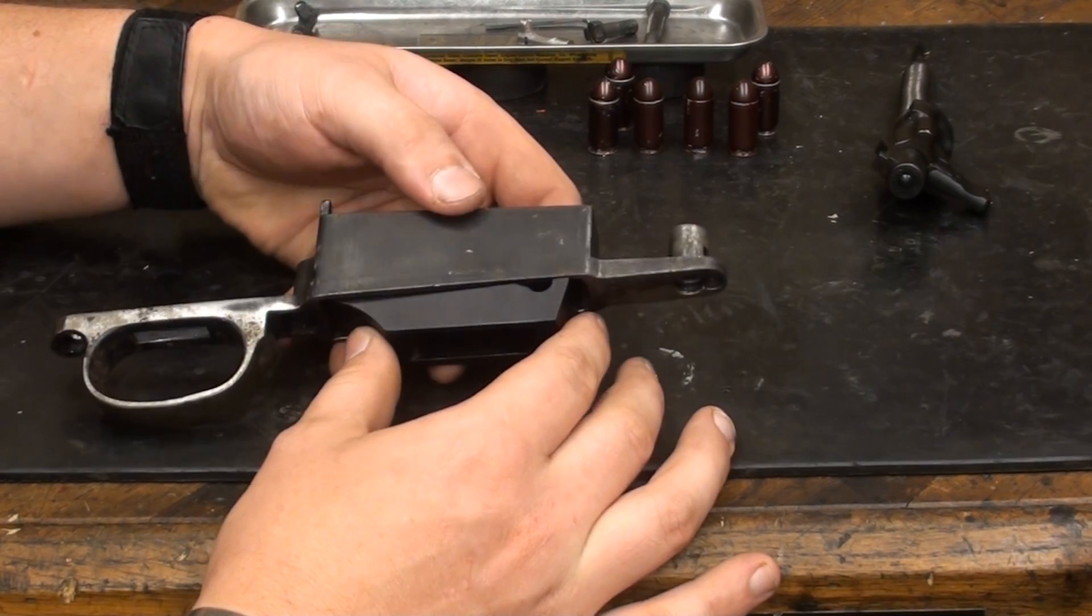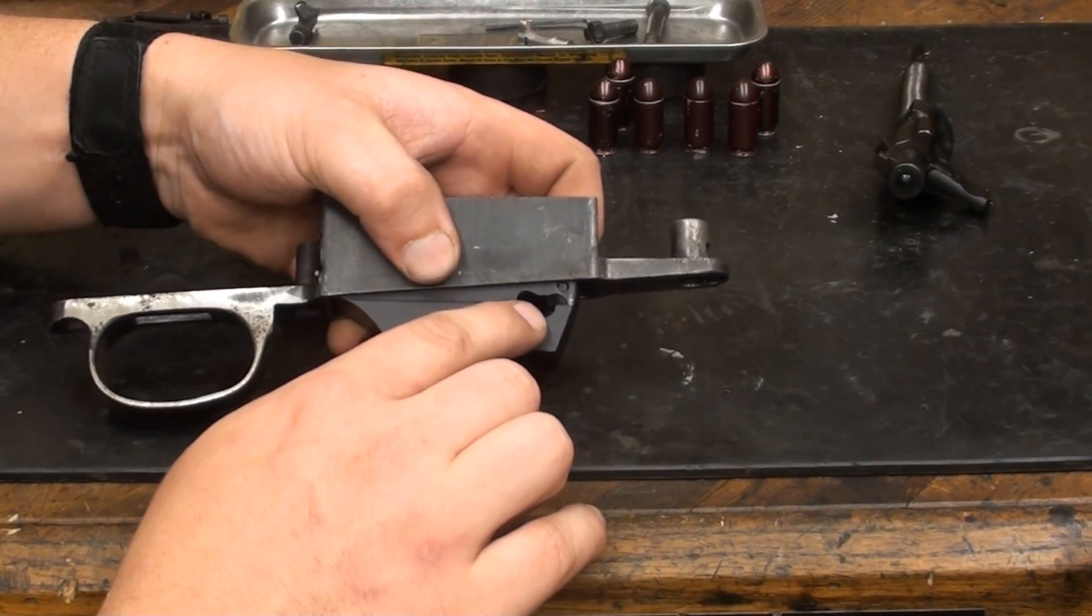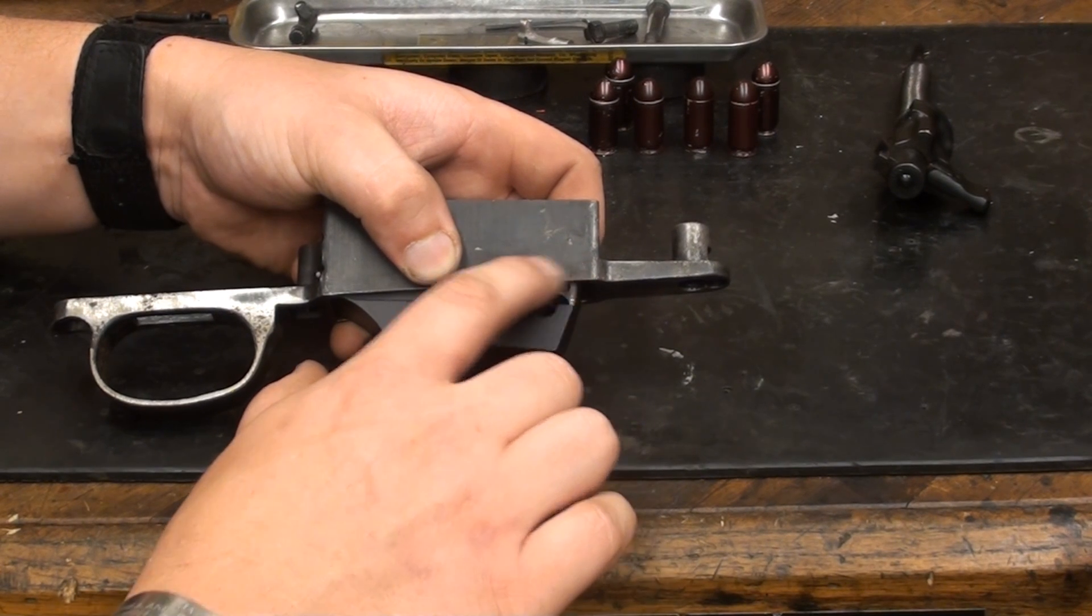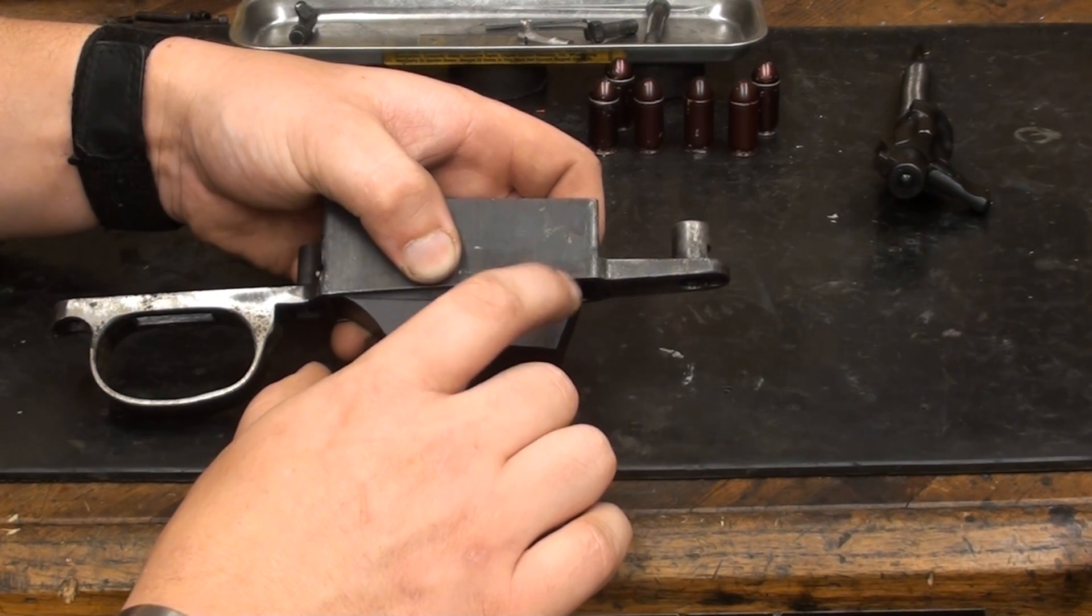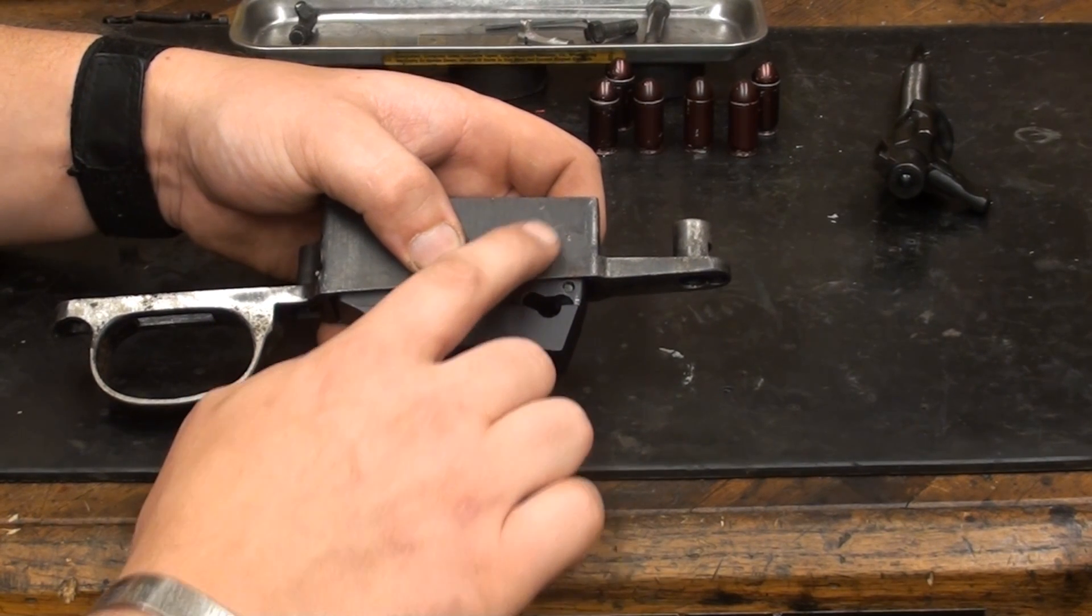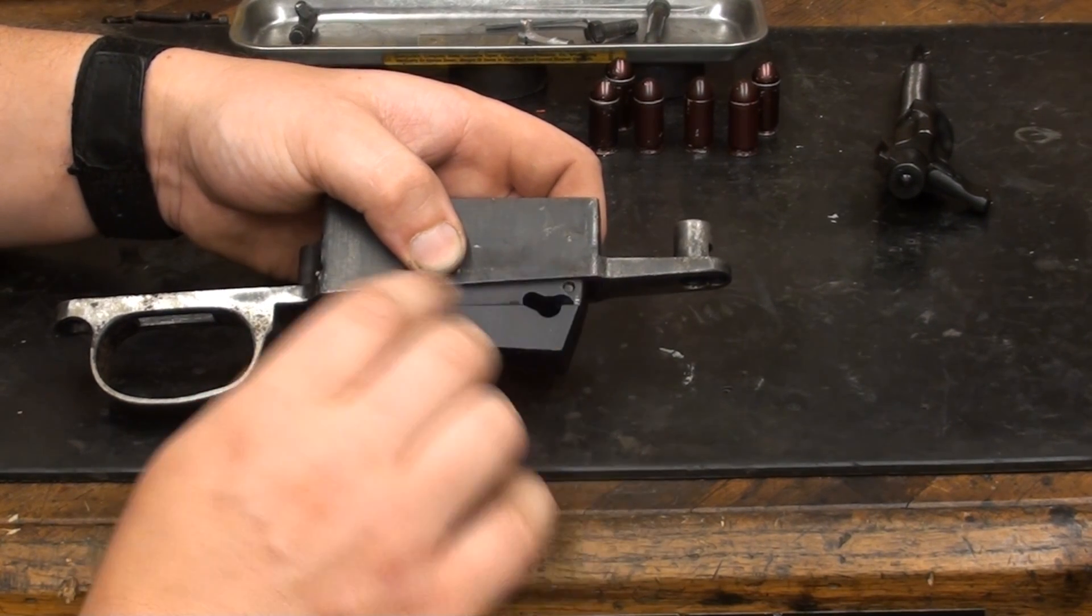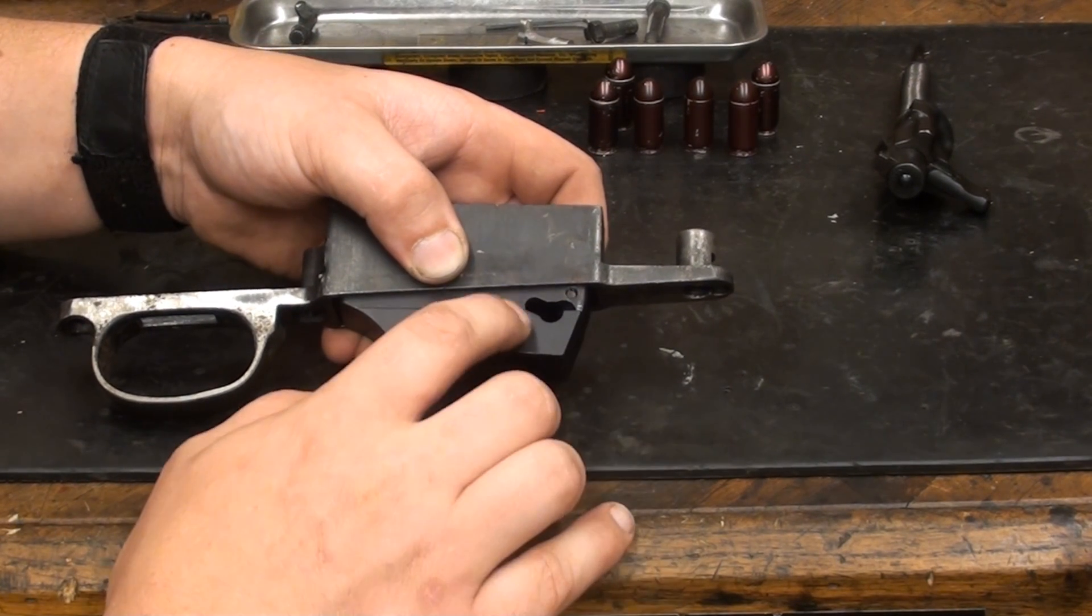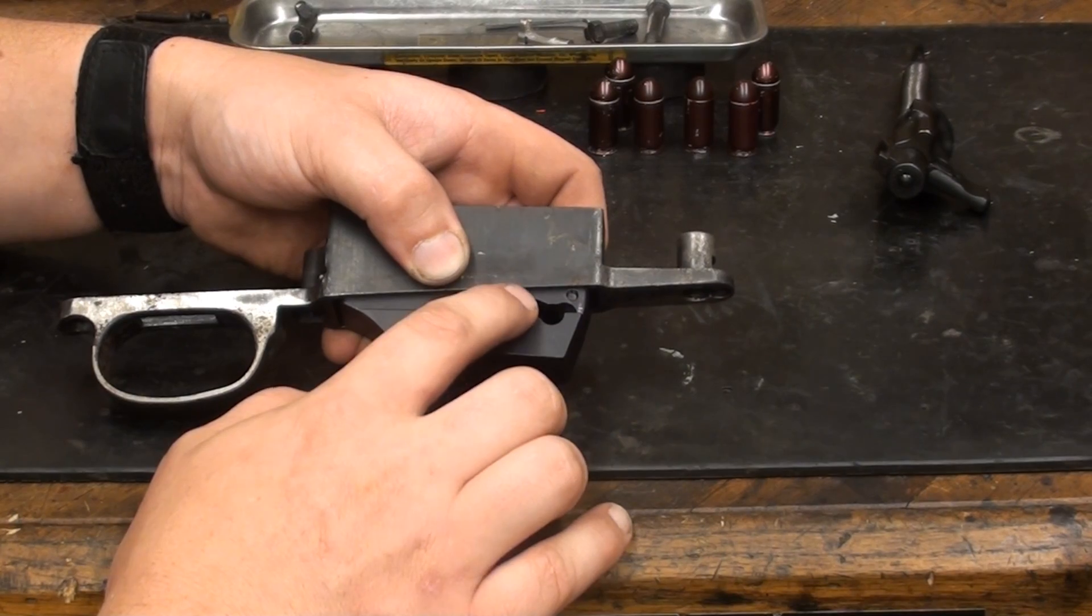Basically, what you're going to have to do here, where the mag catch is right here on the guard, you've got to cut clearances for the mag catch, which can be done in a variety of ways. You can either cut just a large square window, if you don't care about how it looks, or you can use some careful round files and a little bit of time and effort, and you can make it exactly the same contour.